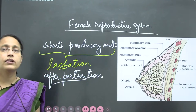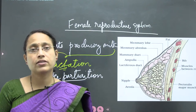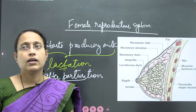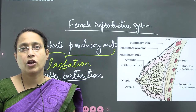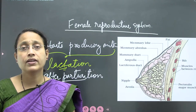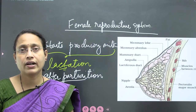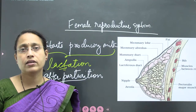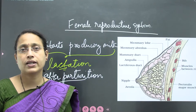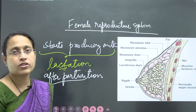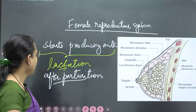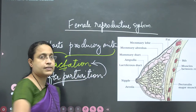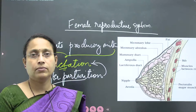Mammary glands are also one of the accessory organs — important accessory structures in the female reproductive system — because after the birth process occurs, nourishing of young ones takes place due to mammary glands. That is why it is an important structure in the female reproductive system. After parturition, the process of lactation begins.